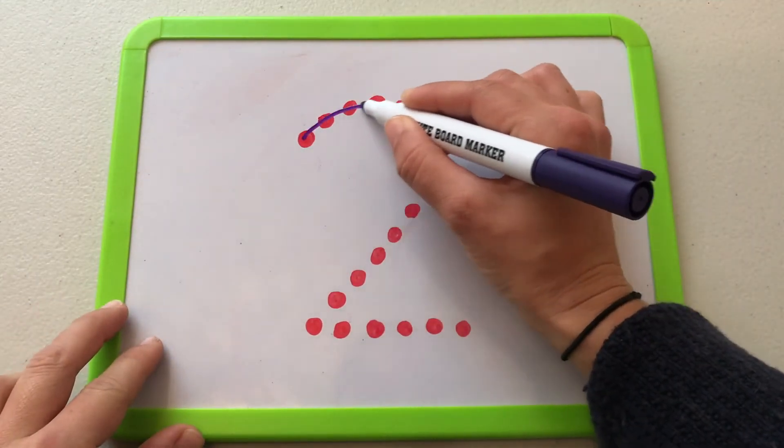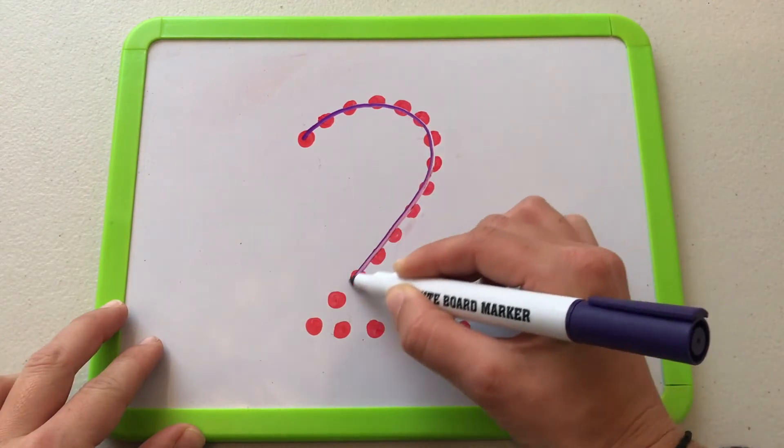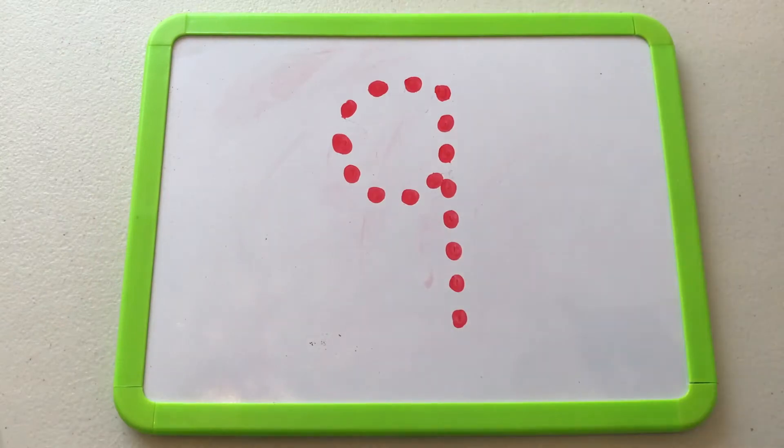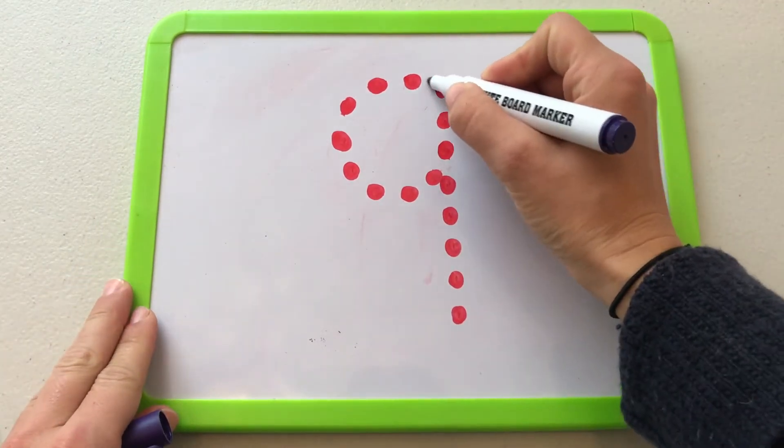You could also reinforce this by providing a dot-to-dot for the child to practice their number formation. This can be done for a one-digit number or a two-digit number.